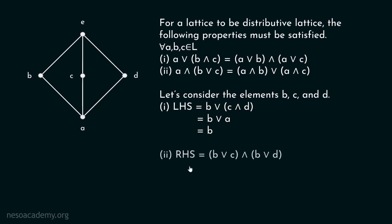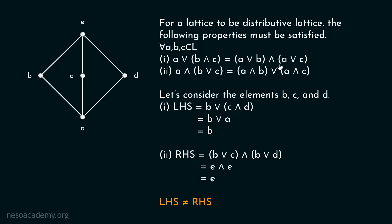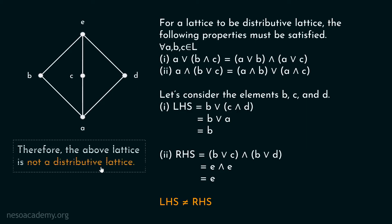Now for the RHS, which is (B∨C)∧(B∨D). The least upper bound of B and C is E, and the least upper bound of B and D is also E. So RHS becomes E∧E, which is the greatest lower bound of E and E, which equals E. We can clearly see that LHS equals B but RHS equals E, so LHS is not equal to RHS. The first property is not satisfied for these three elements, therefore this lattice is not a distributive lattice.